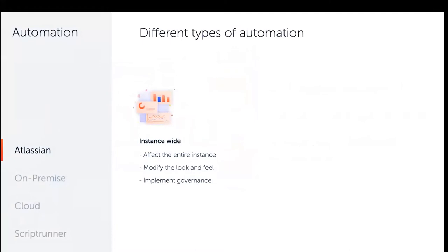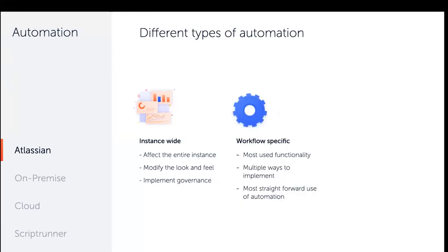There are different types of automation affecting your instances. First, instance-wide automation — things like listeners and ScriptRunner events that reach multiple projects, independent of workflows. You can modify the look and feel of the application using script fragments and integrations in the announcement banner — I used to inject a lot of HTML and CSS. You can also use automation to implement governance and best practices for your organization.